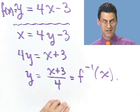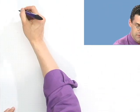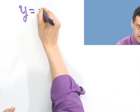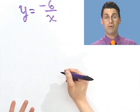Pretty cool. That's all there is to it. Let's try some more. So suppose I'm given the function f of x, and I'll write it as y equals minus 6 over x. What would the inverse be?